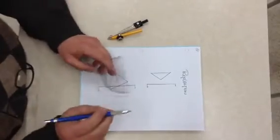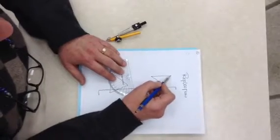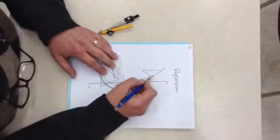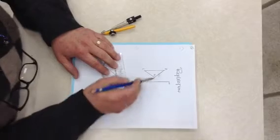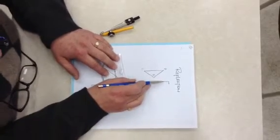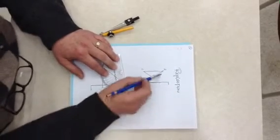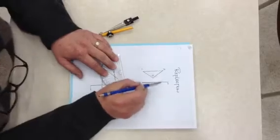To start off, the idea here is that you have to draw a line from each vertex—vertex A, B, and C—across to the reflection line and beyond. But it's got to meet perpendicularly at 90 degrees.